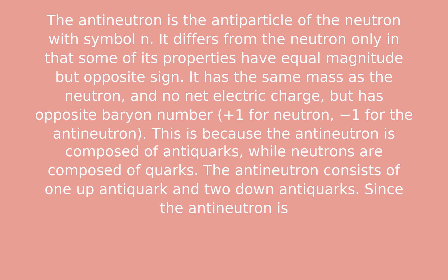The antineutron is the antiparticle of the neutron with symbol N. It differs from the neutron only in that some of its properties have equal magnitude but opposite sign. It has the same mass as the neutron and no net electric charge, but has opposite baryon number.